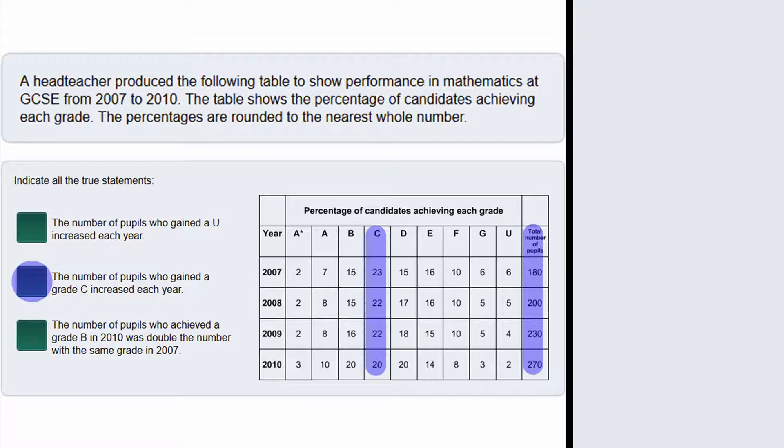Finally the last statement claims that the number of pupils who achieved a grade B in 2010 was double the number with the same grade in 2007. Well let's have a look. We need to have a look at the column here for grade B, and again we are going to look at the total number of pupils.